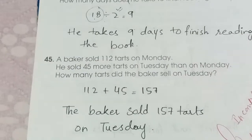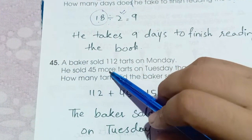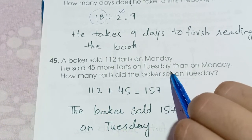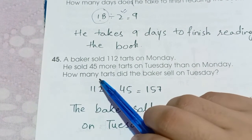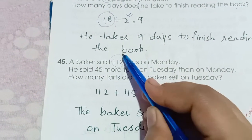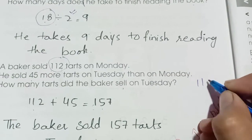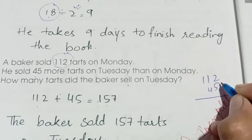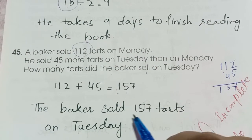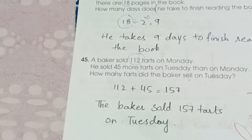Question 45 — the last question of Book 2A: A baker sold 112 tarts on Monday. He sold 45 more tarts on Tuesday than on Monday. How many tarts did he sell on Tuesday? 112 plus 45: 5 plus 2 is 7, 4 plus 1 is 5, and 1. The baker sold 157 tarts on Tuesday. This is the last page of Book 2A.